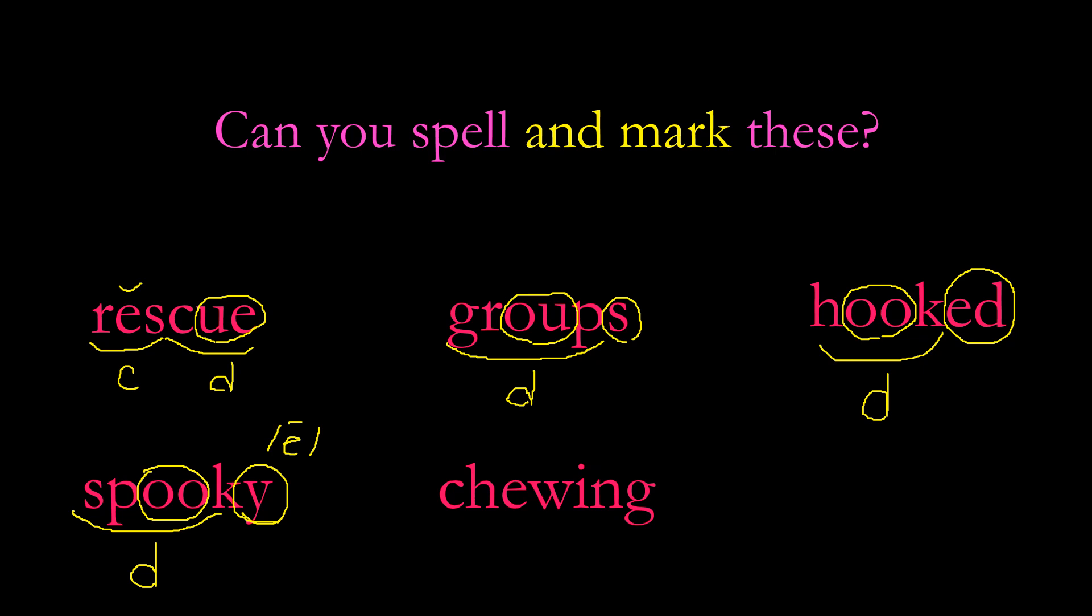The next word is chewing. She gave me a stick of chewing gum. Hopefully you realized that it was just chew with an -ing. So we're going to scoop chew, and we're going to circle ew because that's a diphthong, and we're going to put a d there. And -ing, as we know, is a suffix, so we're going to put a circle around that.